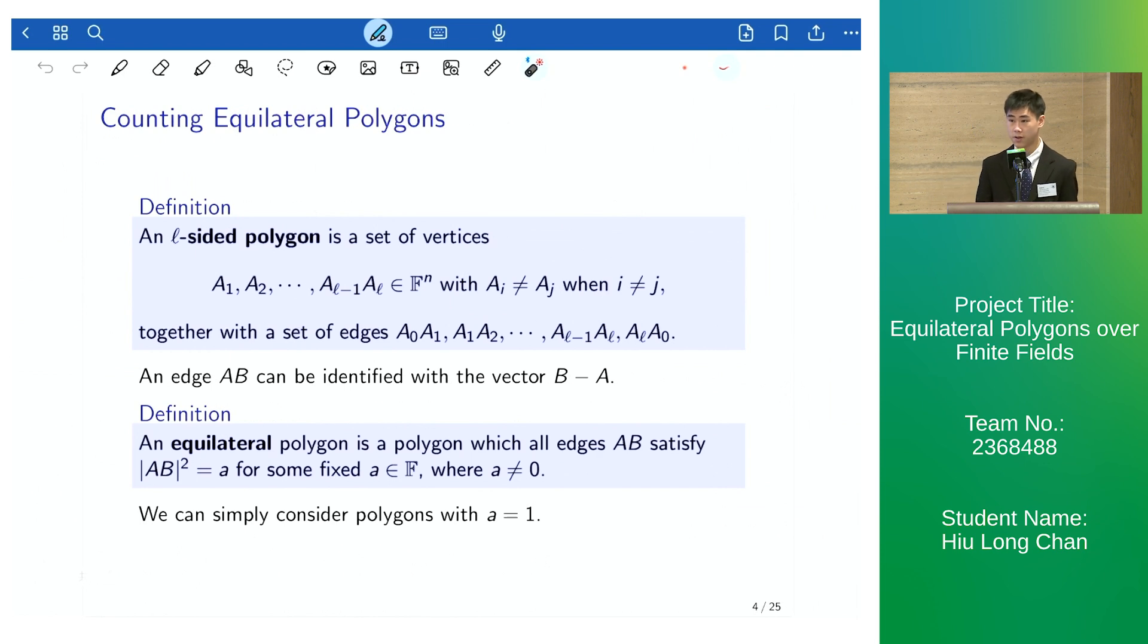An L-sided polygon is a set of L vertices, A_1 up to A_L, with no pairs of vertices all the same, together with a set of edges formed by adjacent vertices.